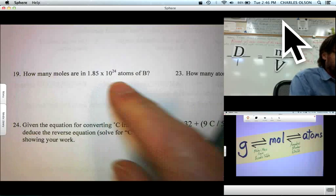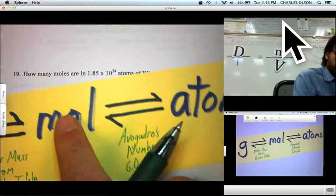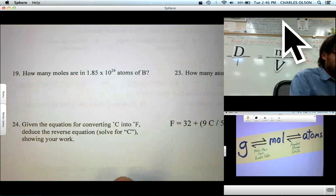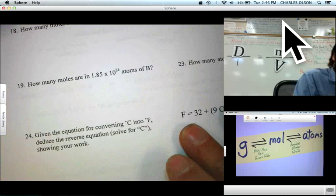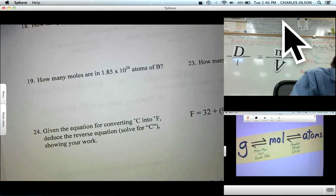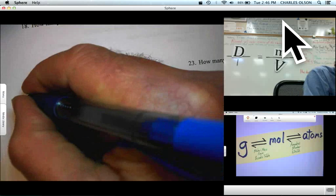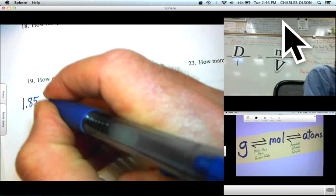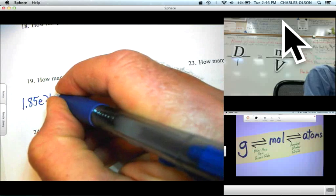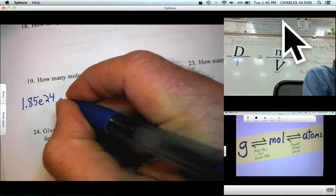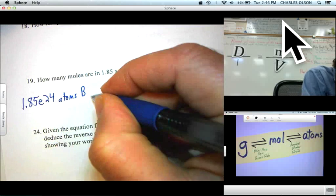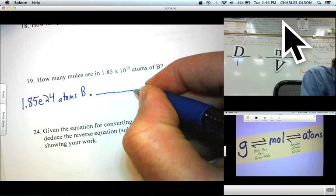Let's see. Can we go directly from moles to atoms? Yes, we can, just using Avogadro's number. So, let's write our given way over to the left. 1.85 times 10 to the 24th atoms of boron times a conversion factor.